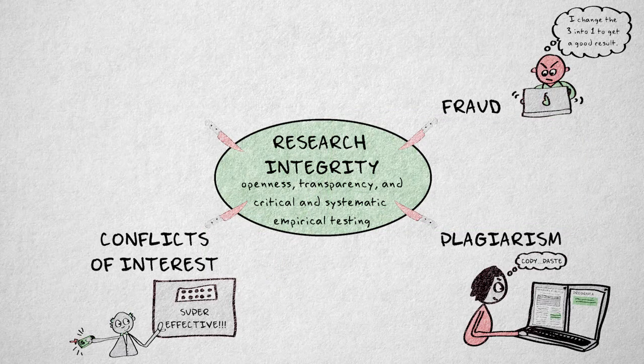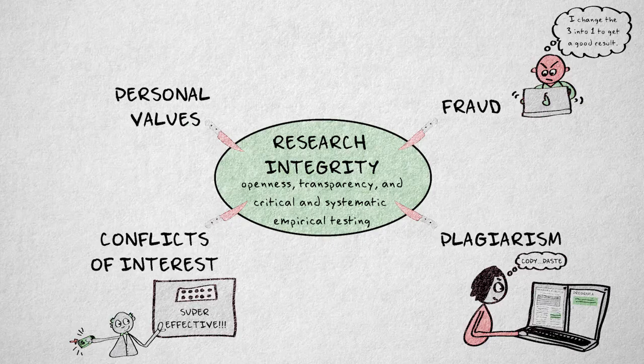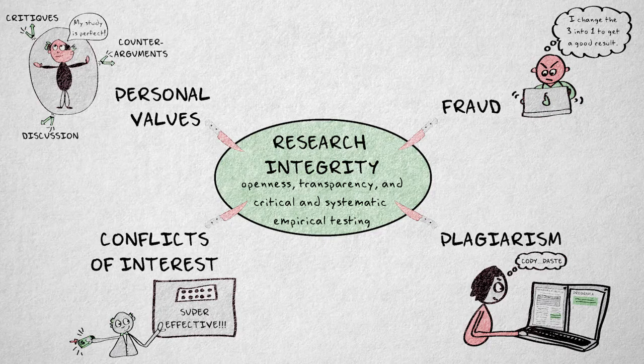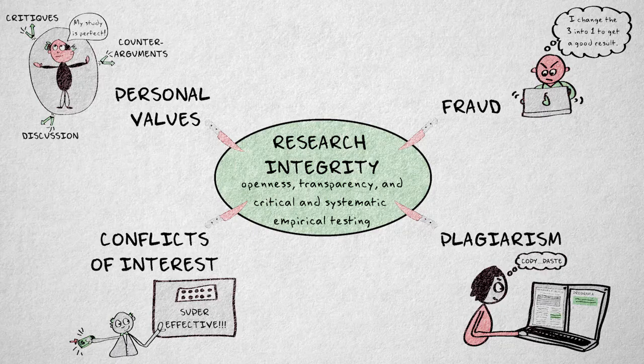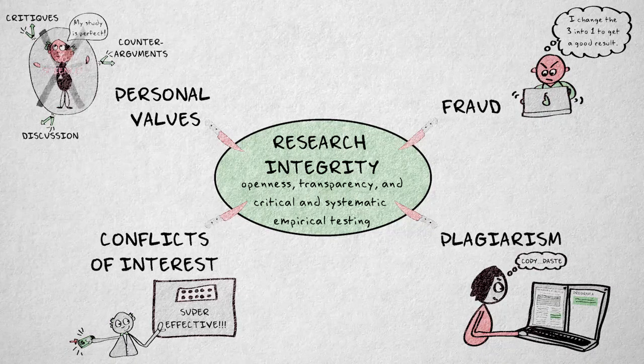A final outright violation of research integrity is formed by undue influence of personal values. Strong convictions or personal values can blind researchers to their data and valid critiques. If researchers do not adhere to the principle of objectivity and are unwilling to accept critique or discuss plausible counterarguments based on logic and empirical evidence, then the researcher places his research outside the realm of science.